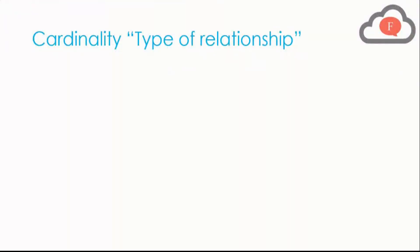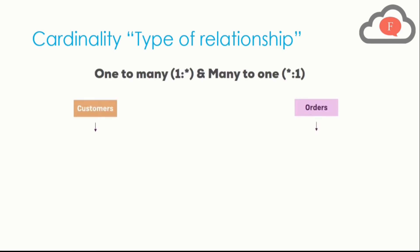So what is cardinality? It is a complex word that creates a lot of confusion, but it doesn't have to. Instead of calling it cardinality, you can think of it as a type of relationship. When creating a relationship between two tables, there are many types of relationships that exist between our data sets, and we can create different types of relationships — this is what we call cardinality.